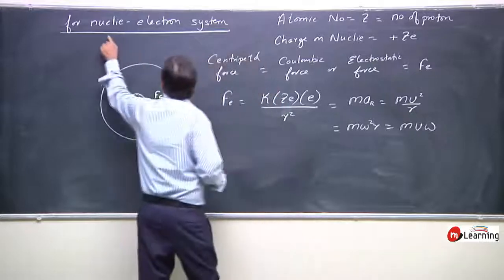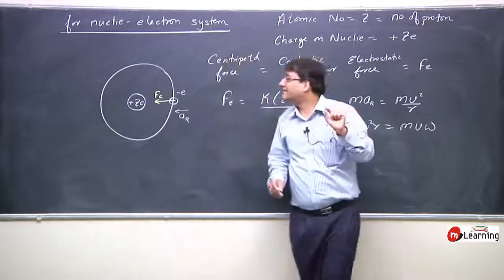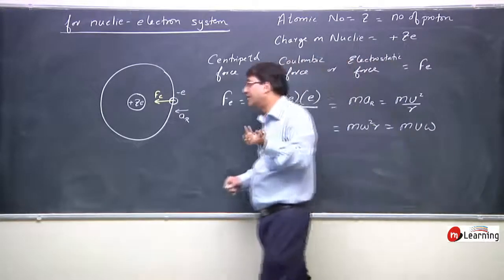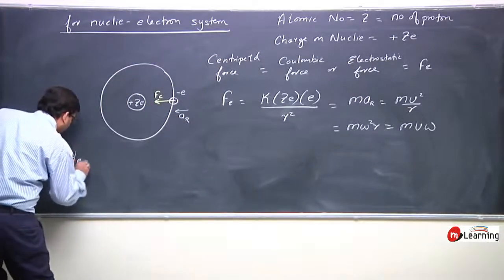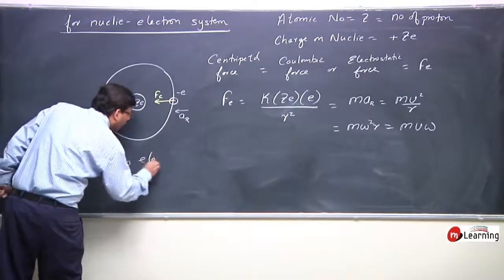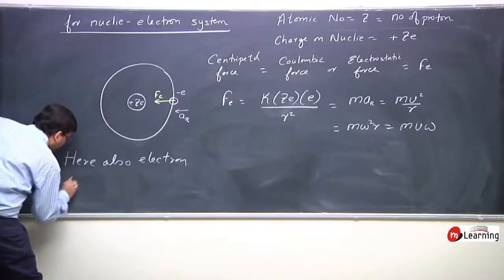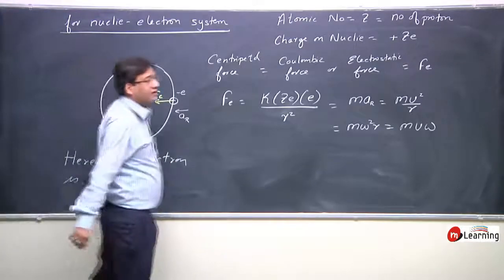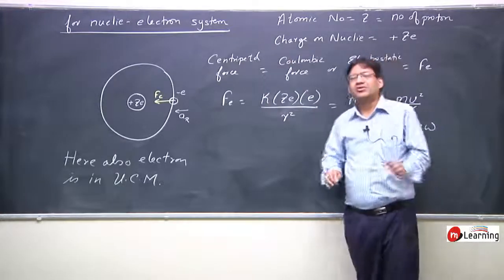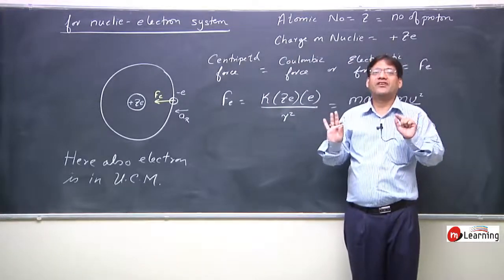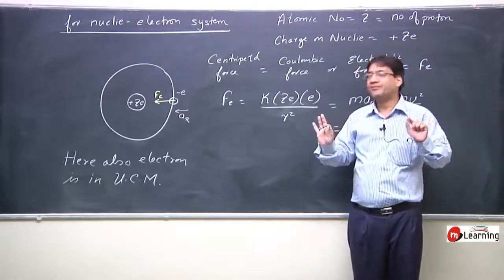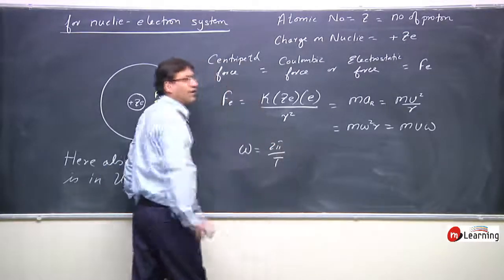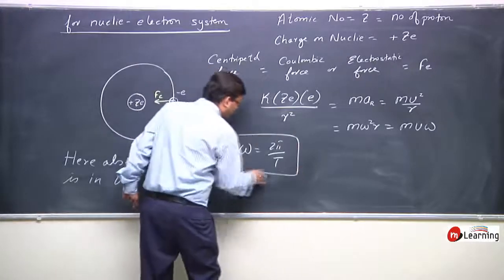In the nuclear-electron system, it is also a situation of uniform circular motion. The electron revolving around the nucleus has constant angular velocity — no change in angular velocity. Angular velocity remains constant, and one can always write omega equal to 2π by T.